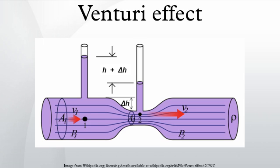The Venturi effect is the reduction in fluid pressure that results when a fluid flows through a constricted section of pipe. The Venturi effect is named after Giovanni Battista Venturi, an Italian physicist.